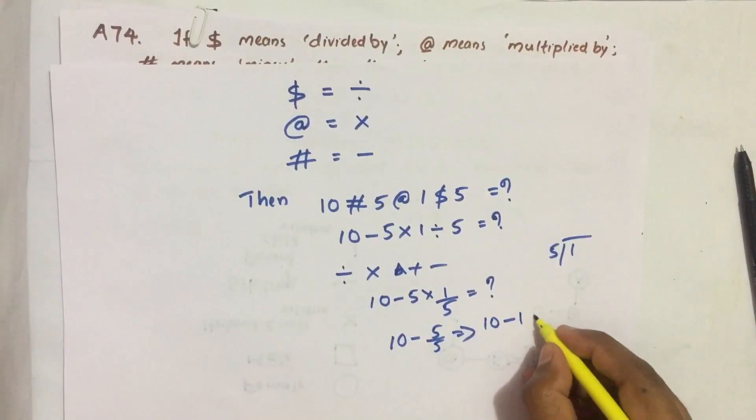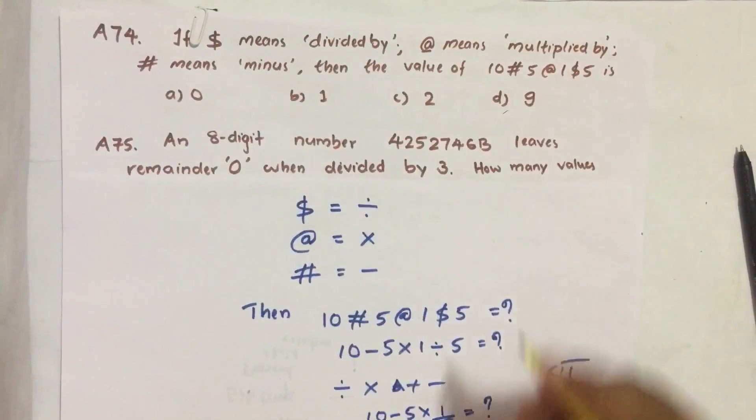10 minus 1, which is equal to 9. Our answer is 9. So option D is our answer.